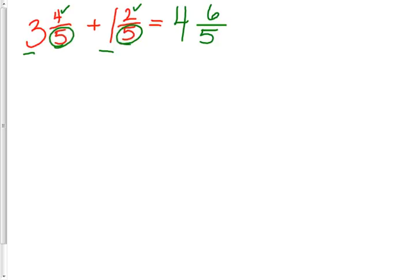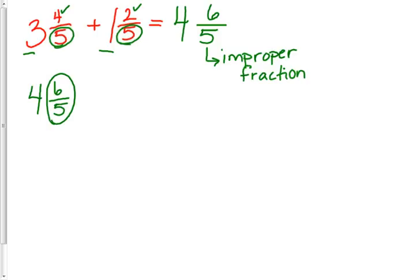Now I'm looking at this and noticing that this mixed number includes an improper fraction, so I need to change that improper fraction. I'm going to rewrite this as 4 and 6 fifths — this 6 fifths is what I need to change. I'm going to count by 5 because that's my denominator, until I get to 6. So 5 plus 1 gives me 6. I keep the denominator the same. Now I've changed the 6 fifths to 5 fifths and 1 fifth.